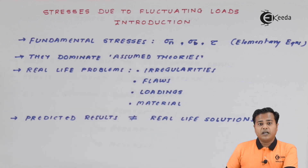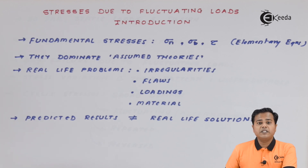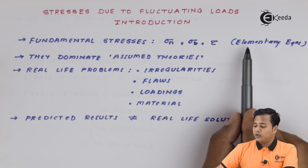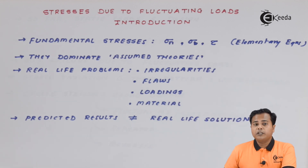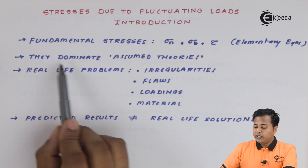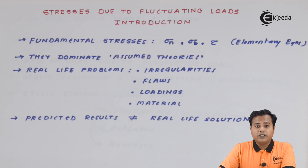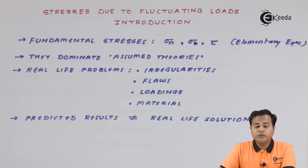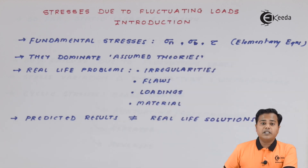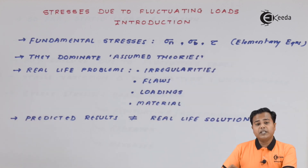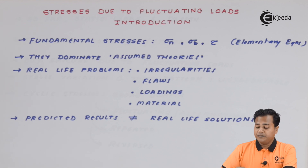The fundamental stresses are normal stresses, bending stresses, and shear stresses. These are the fundamental stresses induced in a body whenever loads act. The equations for these are called elementary equations, or imperial relations, designated for these kinds of stresses. They dominate certain assumed theories — that the cross-section will be uniform, the metal will be homogeneous, and properties will be isotropic.